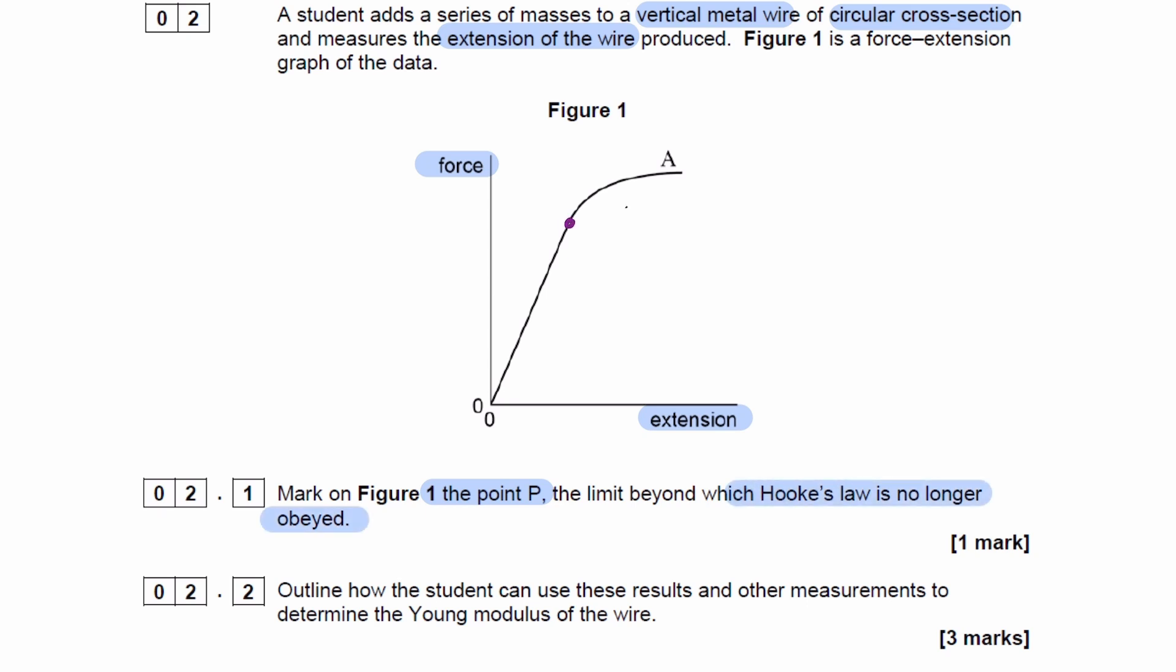This is the point up until which force is proportional to extension. That's the limit of proportionality. That's the point up until which Hooke's law is obeyed.